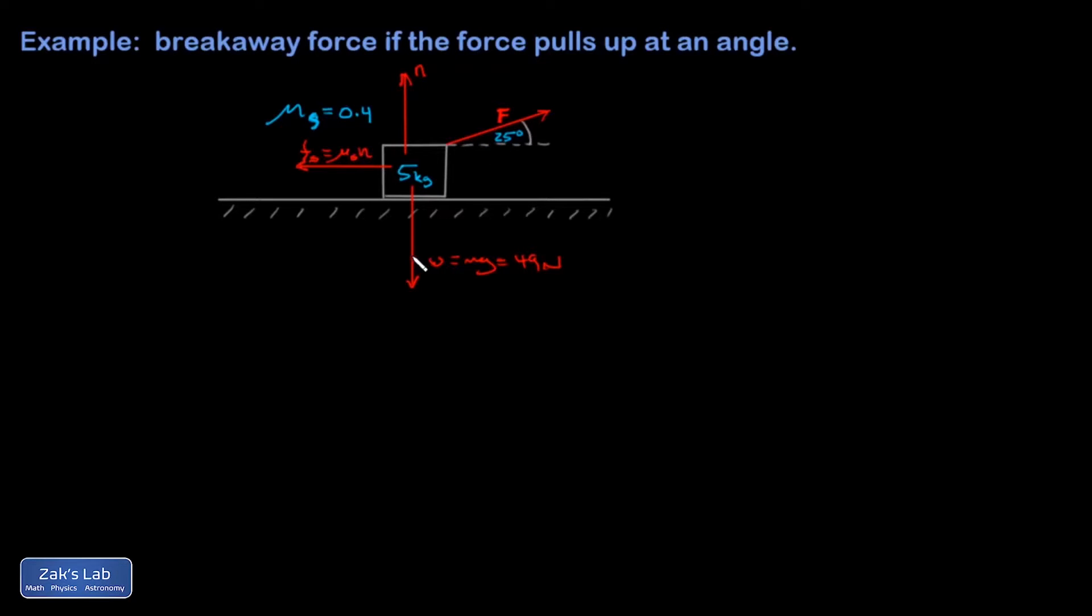That'll be mu sub s times the normal force. All right, and why don't we actually know the normal force right off the bat? The issue is that this force vector has two components: one pulling to the right, so I'll call that Fx, and the other pulling up. So we have to do a non-trivial vertical analysis this time. This little upward component of the applied force is helping the normal force, so the normal force is going to be smaller.